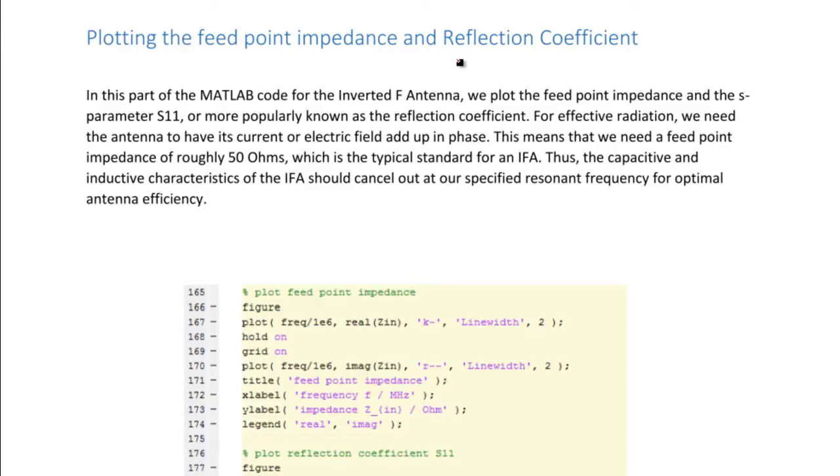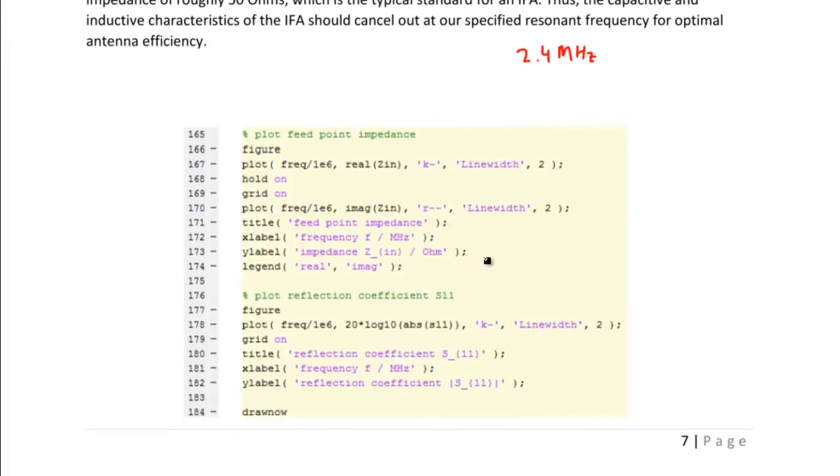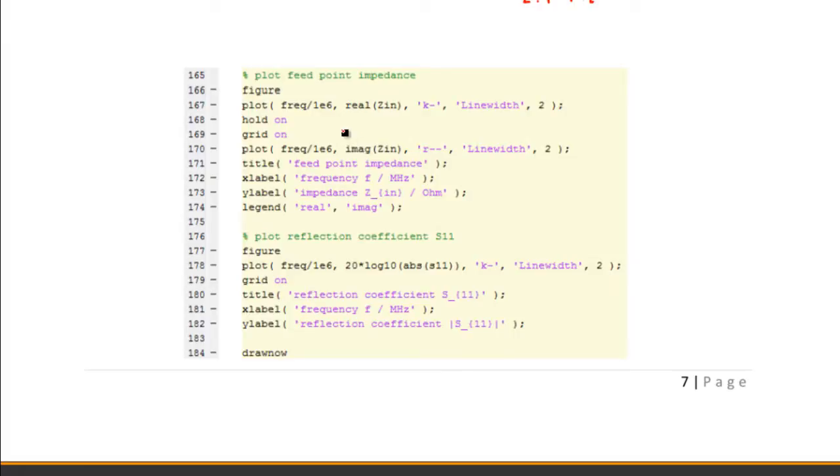So I'm going to be talking about plotting the feed point impedance and reflection coefficient. So in this part of the MATLAB code for the inverted F antenna, we plot the feed point impedance and the S parameter S11, or more popularly known as the reflection coefficient. For effective radiation, we need the antenna to have its current or electric field add up in phase. This means that we need a feed point impedance of just about 50 ohms, which is the typical IFA standard. Thus, the capacitive and inductive characteristics of the IFA should cancel out at a specific resonant frequency of about 2.4 GHz for optimal antenna efficiency. So here we can see the MATLAB code that simply just plots the graph, where we have the real part of the impedance and the imaginary part of the impedance.